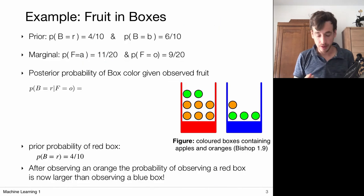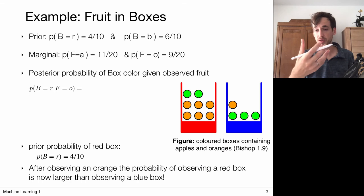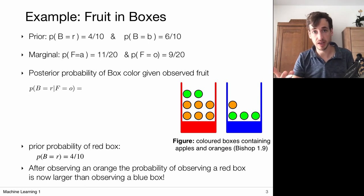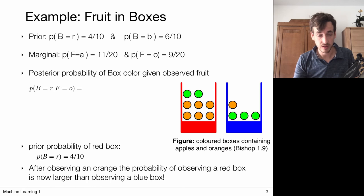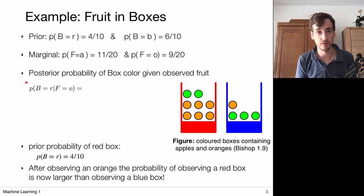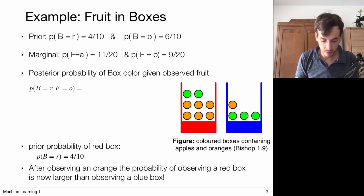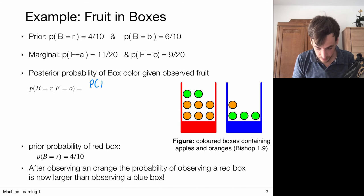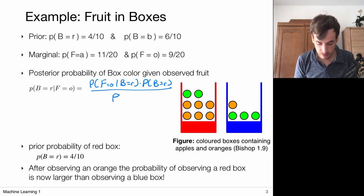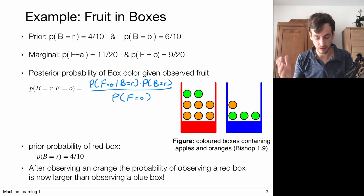In this next example we're going to ask: if we've made part of an observation — for example, having seen that we picked an orange — does this provide us more information on which box it came from? The answer is yes, and we're going to show that via Bayes' rule. Bayes' rule says the posterior probability of observing a red box given that I observed an orange is given by the likelihood of the fruit being orange were it to be picked from the red box, times the prior probability of picking the red box.